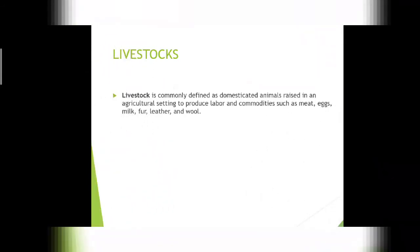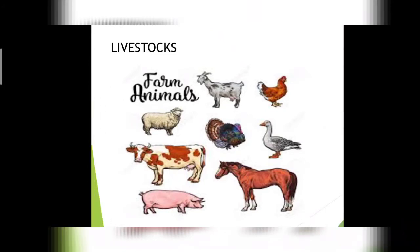Livestock refers to all animals reared on farms for meat, dairy products, transport, labor, and other purposes. Cattle, goats, sheep, oxen, horses, camels, and pack animals such as donkeys are common livestock in Pakistan. Rearing animals is one of the oldest and most common occupations in Pakistan. Normally, every village has its grazing fields where cattle, goats, and sheep are allowed to graze.